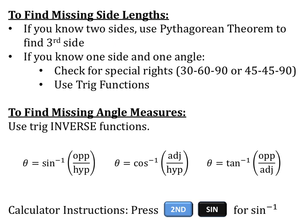If you know one side and one angle, first check if you have a 30, 60, or 45 degree angle — that means it's a special right triangle, so you'll use either your 30-60-90 pattern or your 45-45-90 pattern. If it's not one of those special triangles, then you use your trig functions: sine, cosine, and tangent.